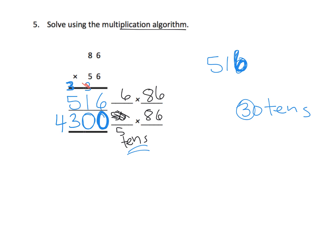And now we're ready to add. So we get in our ones place, 6 and 0, that gives us 6. In our tens place, 1 and 0 gives us 1. In our hundreds place, 5 and 3 gives us 8. And in the thousands place, it just gives us a 4. So the answer is 4,816.